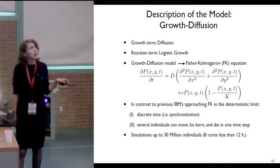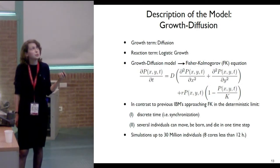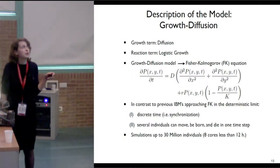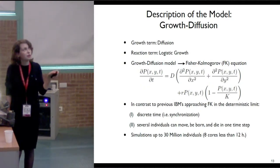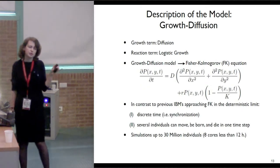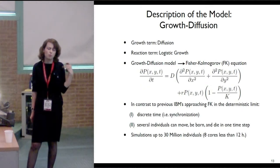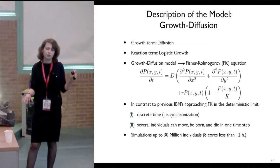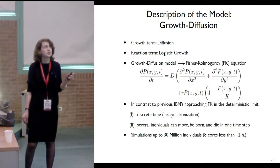Now we combine the model of growth and the model of diffusion, so that we have a growth-diffusion process. Since we could show that in the limit the growth term approaches logistic growth and the movement term approaches diffusion, together we have a Fisher-KPP equation. So at each time point, each individual decides if it will move, if it will give birth, or if it will die, and then at the end of the time step we update. The number of individuals in each cell is constant during the time step.